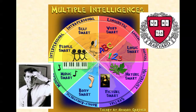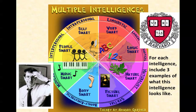This is where you would write the definition. It's based on the idea that humans process information in different ways. His theory was a critique of the standard intelligence theory which emphasized one's abilities. I'm now going to go through each of the eight intelligences and I want you to include three examples of what they look like.